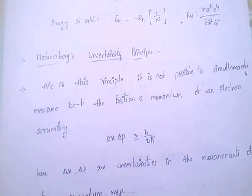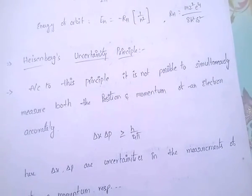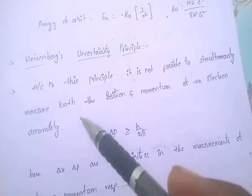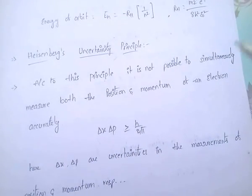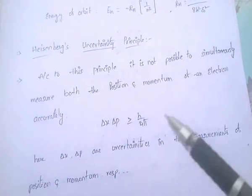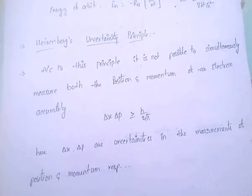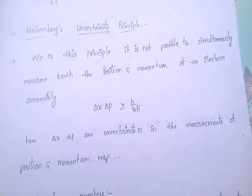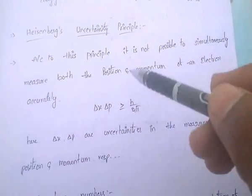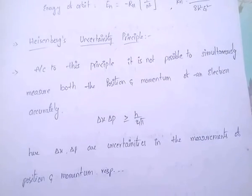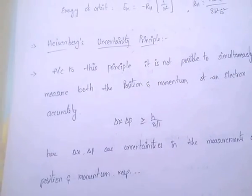Next is Heisenberg's Uncertainty Principle. According to this principle, it is not possible to simultaneously measure both the position and momentum of an electron accurately. That is, Δx × Δp ≥ h/4π. Here, Δx and Δp are the uncertainties in the measurement of position and momentum respectively. We cannot measure both position and momentum at a time with accuracy.